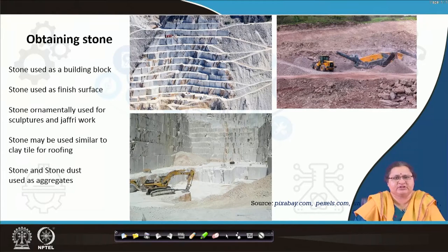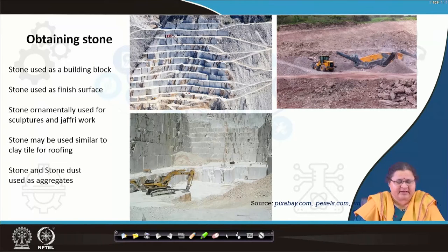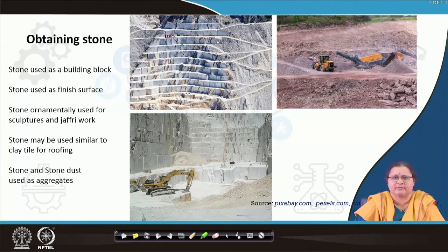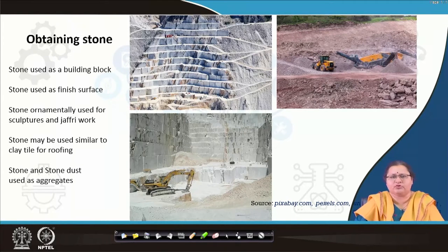Stones can be used as a finish on top of a surface. Stones can be ornamentally used by working on them, like making sculptures or jaali works. Stone may also be used similar to clay tile for roofing purposes, as well as used for aggregates in concrete mixes. Similar to how fourth-class burnt brick was used for foundations, the debris from the stone quarry can be selected and put to use as aggregates in concrete.